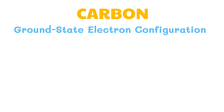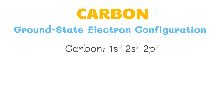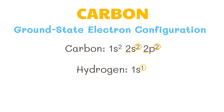The ground state electron configuration of an atom is a description of the orbitals that the atom's electrons occupy. The carbon atom with electron configuration of 1s2, 2s2, 2p2 has four electrons in its valence shell or outer shell, while hydrogen with electron configuration of 1s1 has one valence electron.